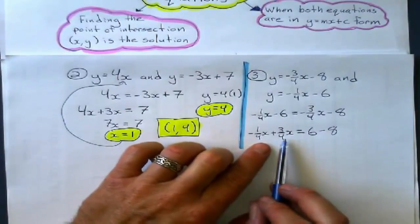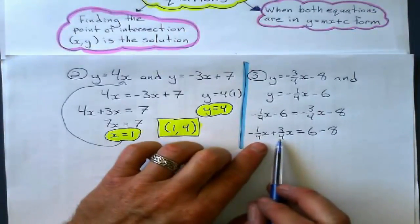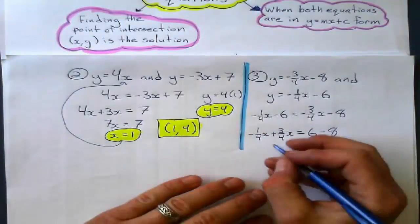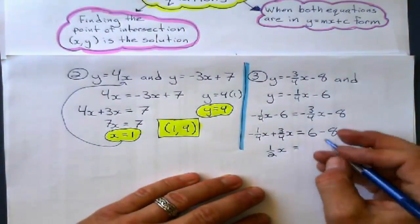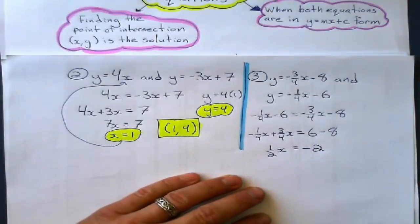Simplify on the left side. Negative 1 quarter plus 3 quarter. Okay. What is that? I know what that is. It's 1 half x equals 6 minus 8 is negative 2.